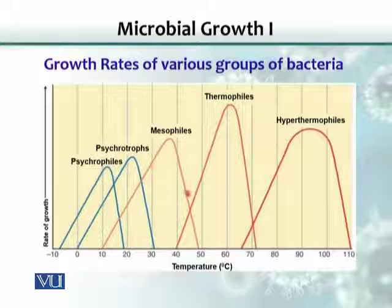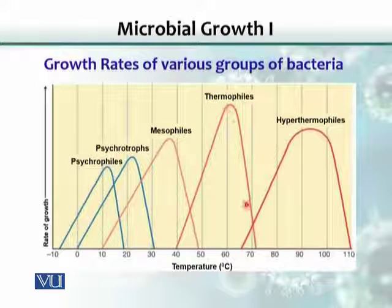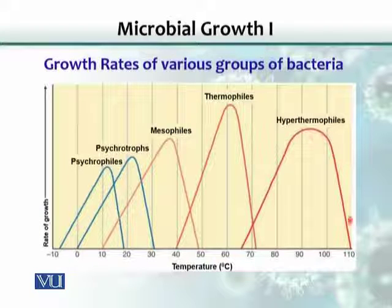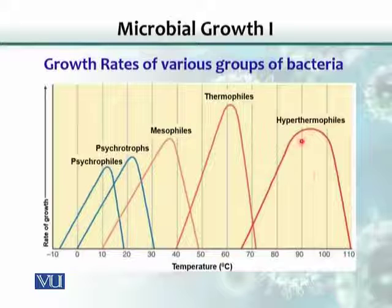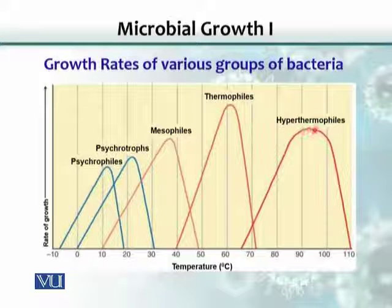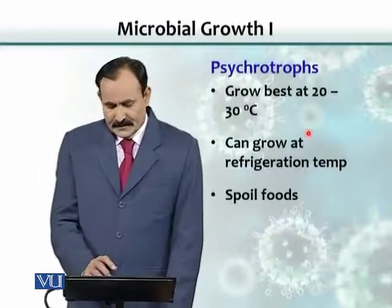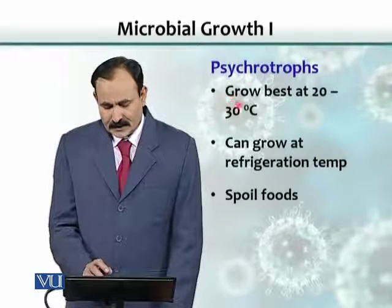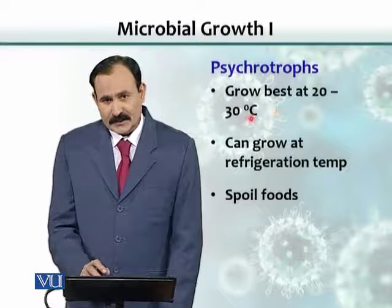Mesophiles fall in the middle of the temperature scale. Then there is a category of bacteria that like to grow at even boiling temperatures — those found in hot springs, which like to grow close to 80 to 90 degrees Celsius. These are called hyperthermophiles or hyperthermophilic bacteria. Psychrotrophs grow best at 20 to 30 degrees Celsius.